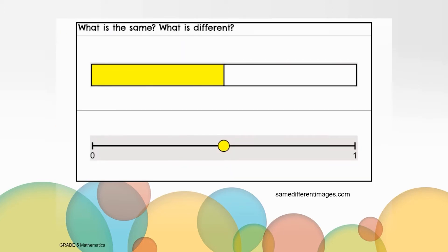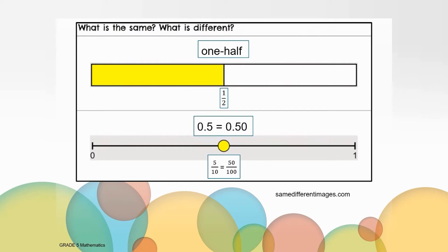What is the same and what is different about this image? Did you think to yourself that the top bar has no markings but the bottom number line was labeled 0 and 1 as endpoints? Or maybe you thought that one half of the top bar is shaded in yellow and one half of the number line is marked with a yellow dot. How did you notate your thinking? Did you visualize the words one half in your head or did you write one half in fraction form? I wonder if anyone marked the number line with 5 tenths or 50 hundredths, both as fractions and decimals.